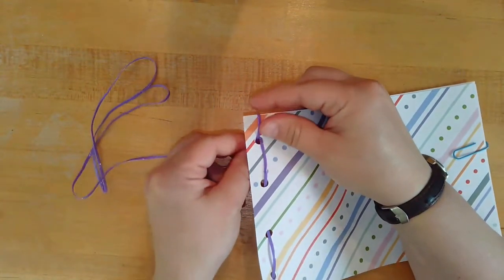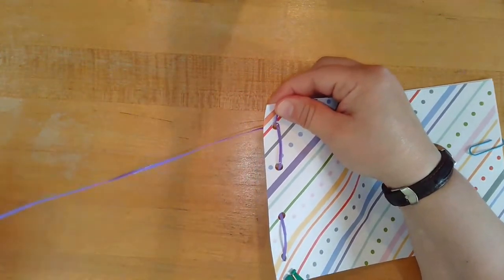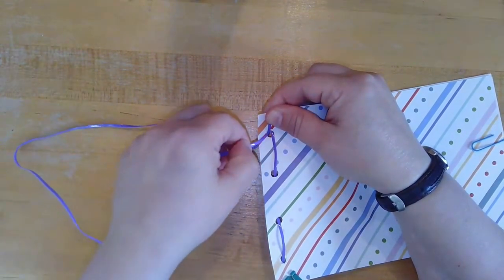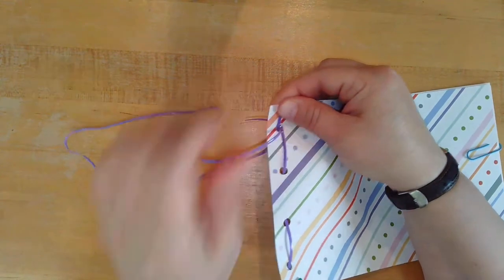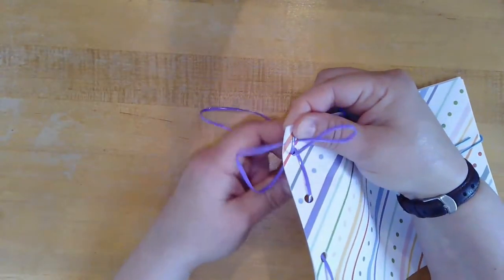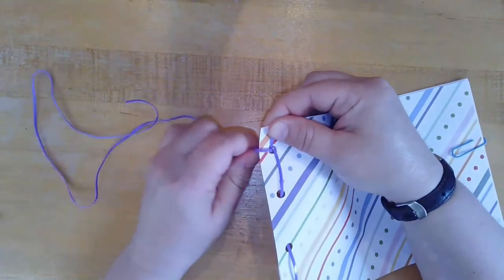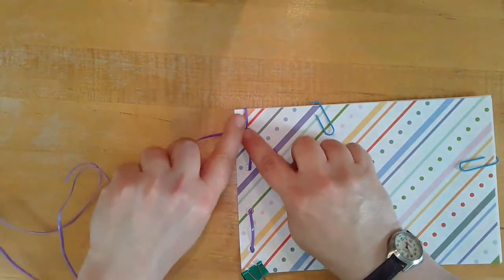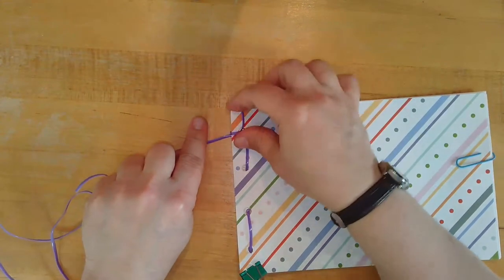Now, your string should be at the back of your project. You're going to bring it around to the front, through the front of the same top hole again, and pull out from the back. Again, making sure that it's lying nice and flat. You have your top corner sewn and bound.